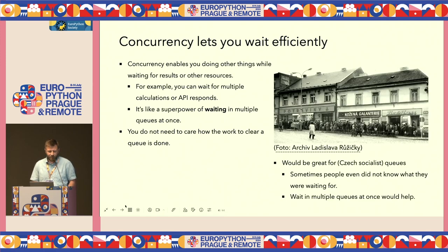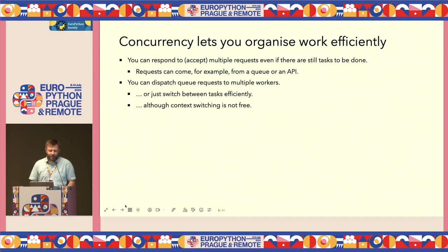I wish our country would learn how to operate multiple queues. This is some ancient picture — not that ancient, a couple decades ago — where people waited in long queues without knowing what the queues were for, or what the stock was. So concurrency would also let you organize your work efficiently. For example, if you're accepting requests for work, you can just respond politely, write a note, and eventually do it. Or you can efficiently dispatch multiple queues and multiple workers.